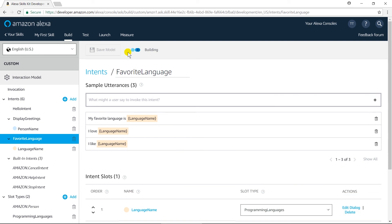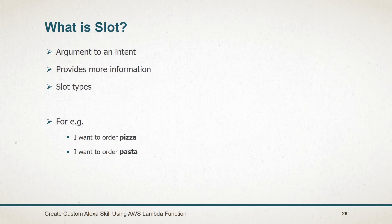Now let us review what we learned in this session. A slot provides information required by our skill's intent. There are two kinds of slot types: first is built-in, where Amazon provides various slot types, and second is custom, where we can create our own custom list type. In the next session we will see the required request and response format to create a Lambda function.